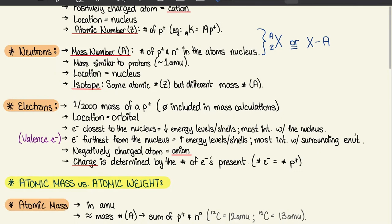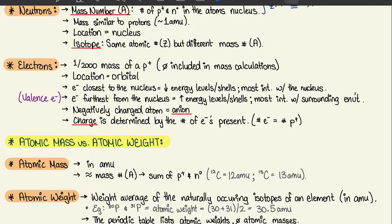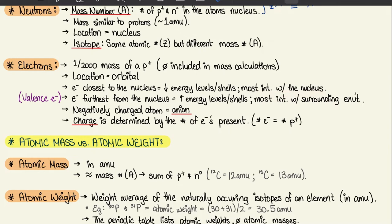Moving on to electrons. The mass of electrons is significantly smaller than that of a proton, so we don't usually include it in calculations — it certainly won't be given much significance on the MCAT. Electrons are not found in the nucleus; they are orbiting the nucleus, which consists of both neutrons and protons. The electrons found closest to the nucleus are in low energy levels or shells and most interact with the nucleus, whereas ones further away are in a higher energy level and interact with their surroundings.